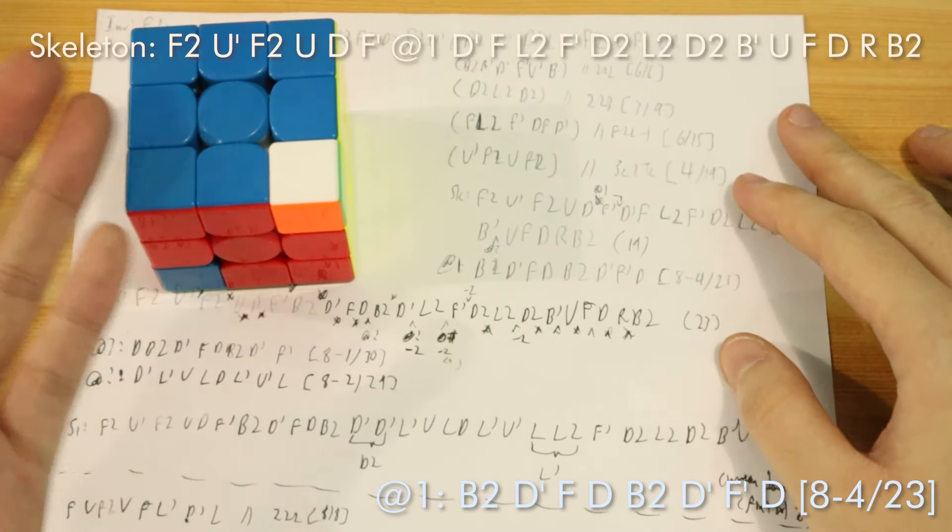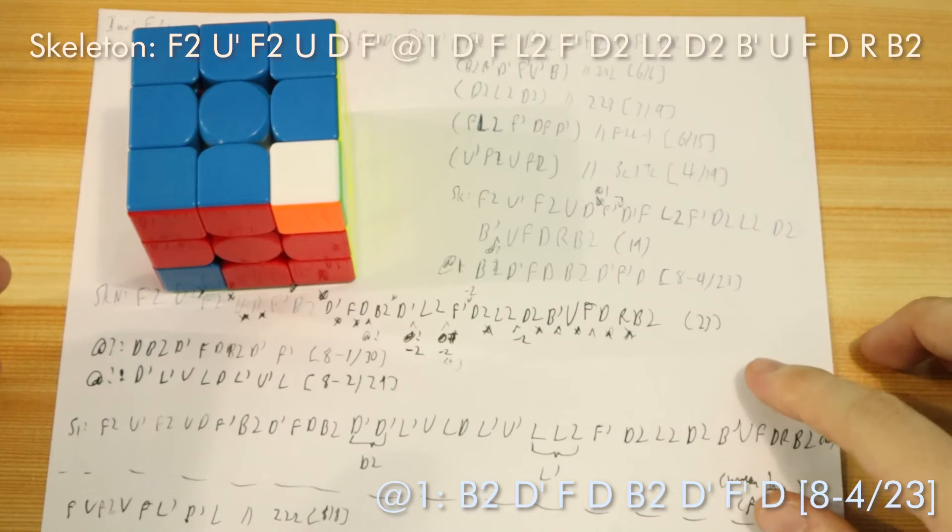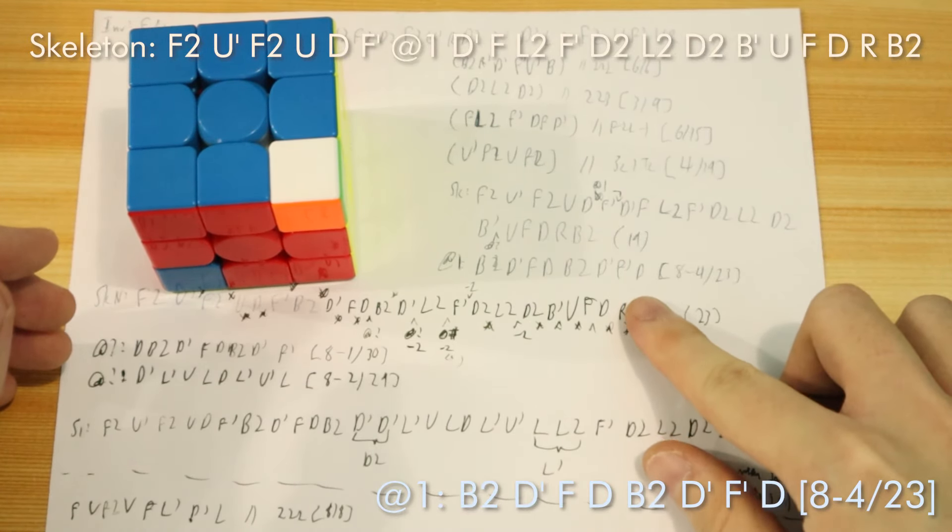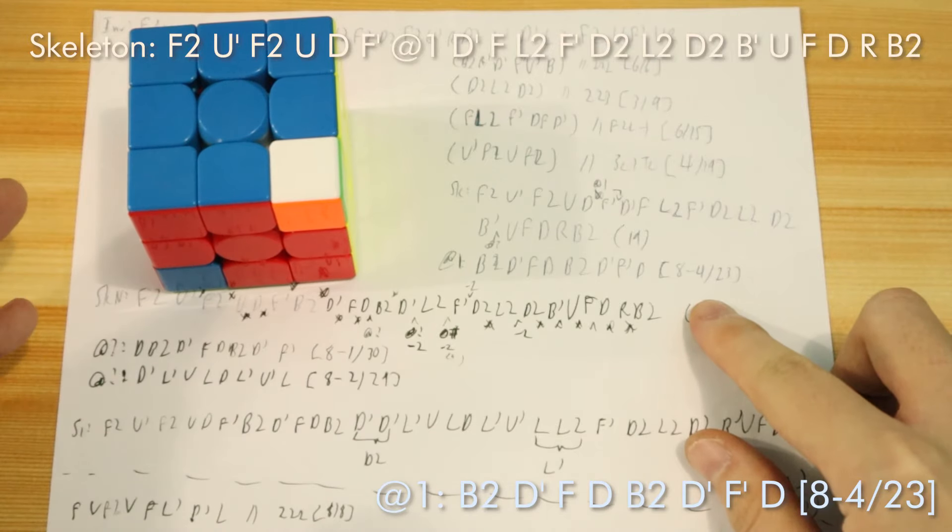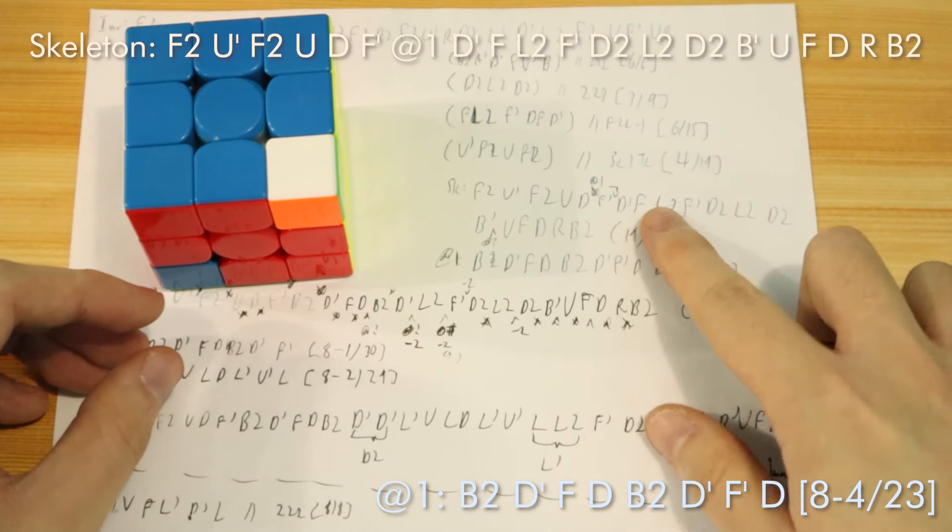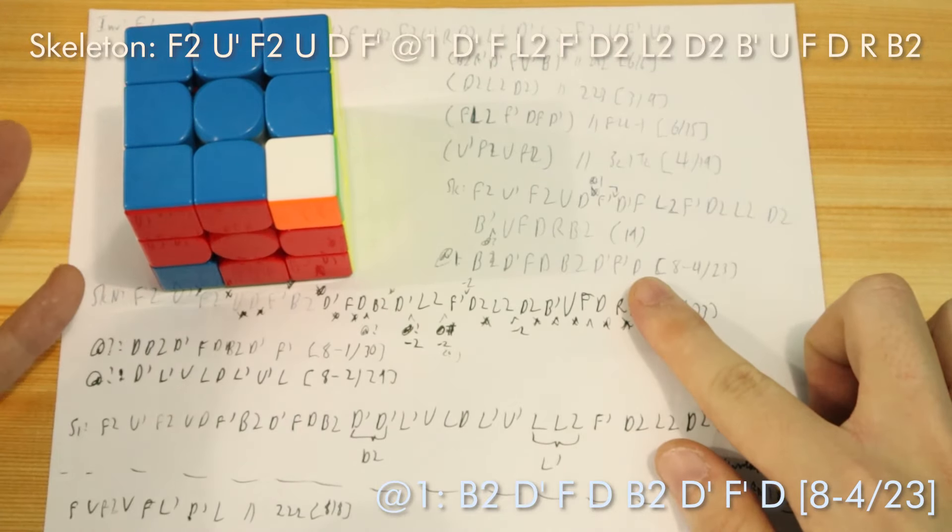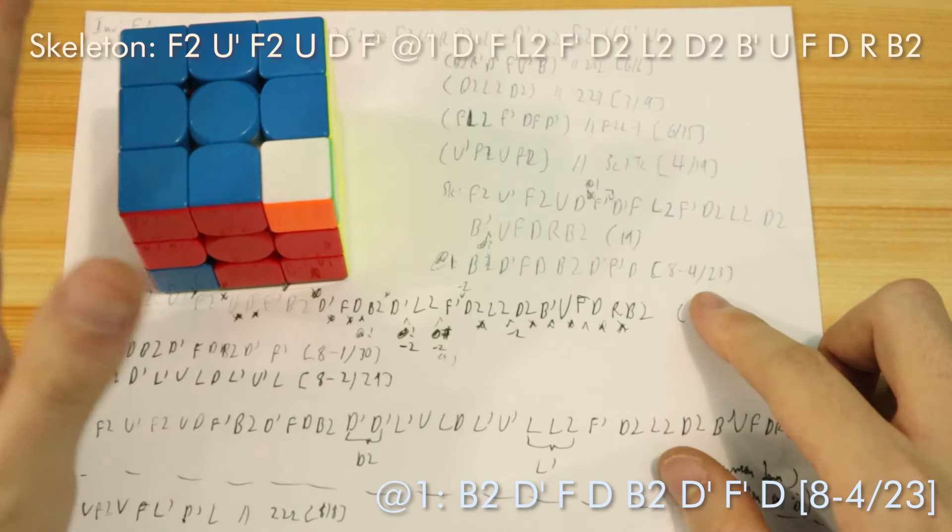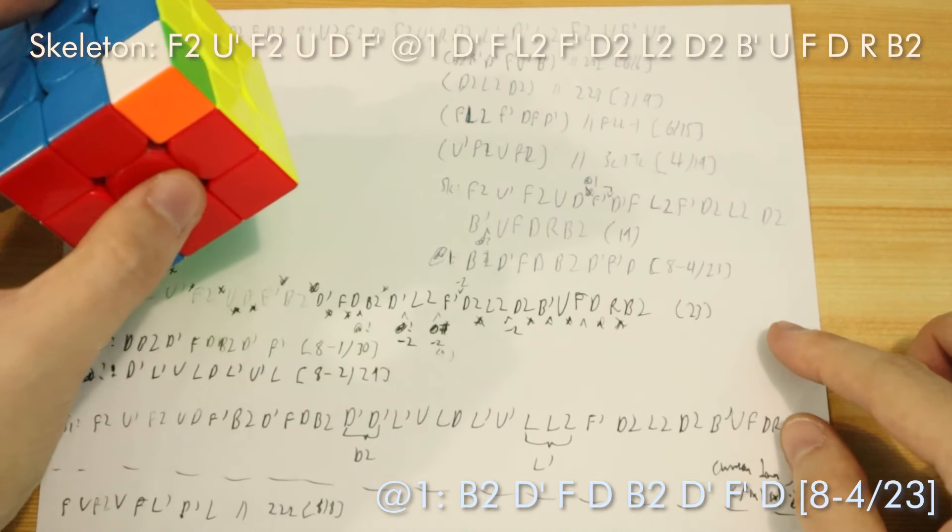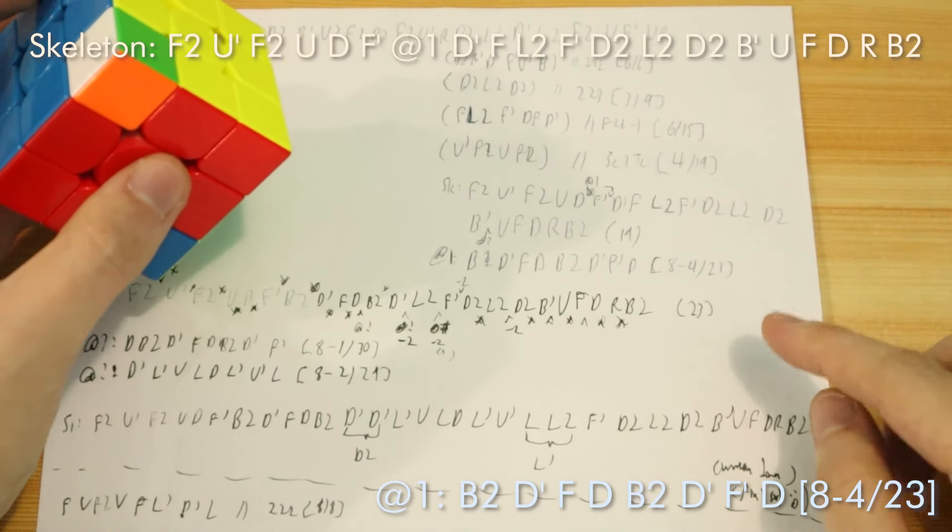What was most surprising about this insertion is that putting it in this spot actually ends up cancelling four moves. So the D cancels with a D' and the F' cancels with the F. And so that takes a total of four moves from the eight move insertion. And so that brought me to 3c in 23 moves.